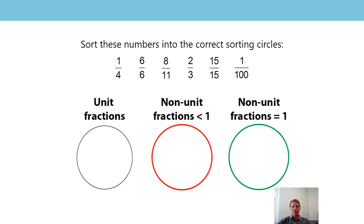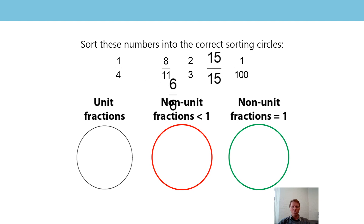Now I want to do some sorting. At the bottom I've got three sorting circles, and at the top I've got six fractions. I want you to think about which fraction goes into each sorting circle. Pause the video and have a go. The one we're going to start with is the non-unit fractions which equal 1 - when the numerator and the denominator of the fraction are the same, we can say it has a value equal to 1. Out of those fractions, which ones have the numerator and the denominator the same? Six sixths and 15 fifteenths - they would both go into our non-unit fractions that are equal to 1 circle.